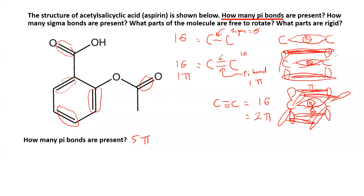Now what's harder is determining the number of sigma bonds. Sigma can be associated with just a bond and a line, but one of the problems with organic structures when they show them in line formula is they don't always show you all of the carbons and hydrogens. For example, there's a carbon right there, there's a carbon right there, right there, right there — all around this ring. There's a carbon there, there's a carbon there, and there's a carbon on this terminal end.